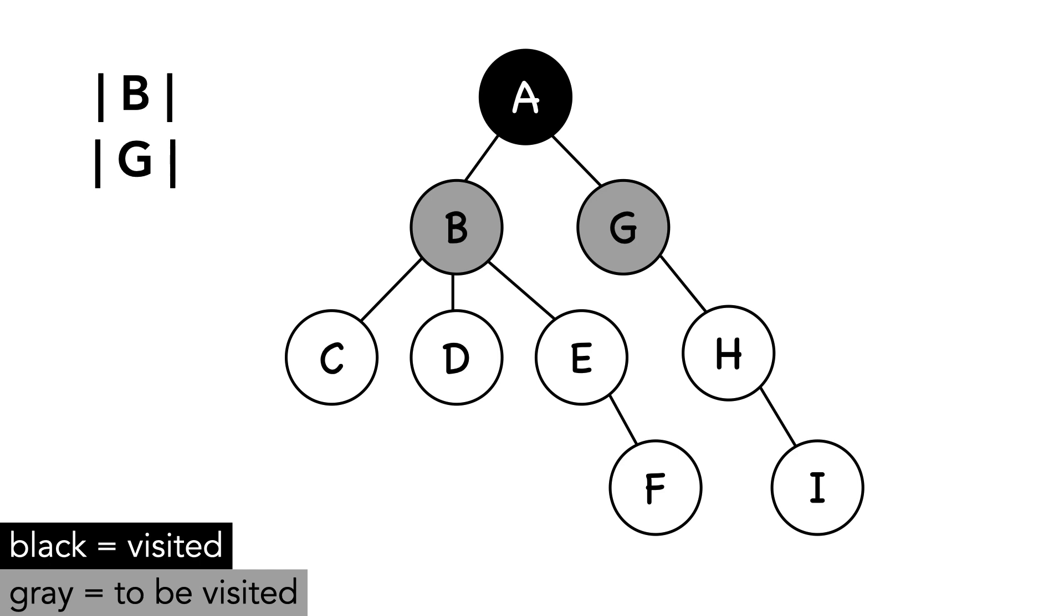B is the next node popped from the stack. We mark it as visited. Notice G is the only node in the stack, but as we add B's adjacent nodes, G gets moved to the bottom.